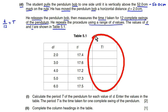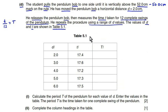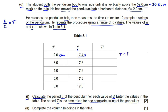Part d1 says: calculate the period capital T of the pendulum for each value of d and enter the values in the table. The period capital T is the time taken for one complete swing. For d equal to 2 centimeters, the time taken for 12 swings is 17.4 seconds. The unit must be seconds — obviously it can't be 17.4 minutes. So the period is determined by dividing 17.4 by 12.